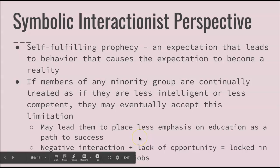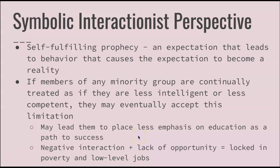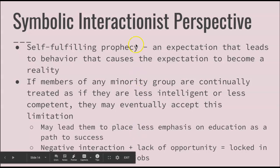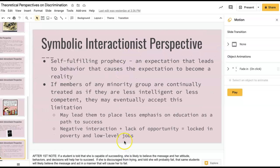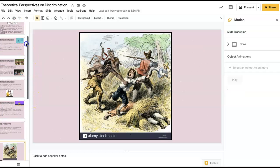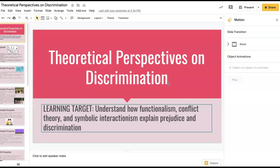Negative interaction coupled with lack of opportunity can result in a person being locked in poverty and low-level jobs. If somebody is constantly told they can't succeed and that there are no opportunities for them, they may eventually believe that and stay in that lane. This brings us to the end of Theoretical Perspectives on Discrimination — three different ways in which to learn and understand how prejudice and discrimination are instilled in the fabric of our society. Please let me know if you have any questions by sending a message through the inbox.